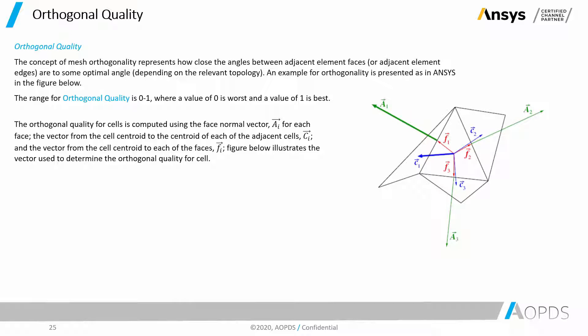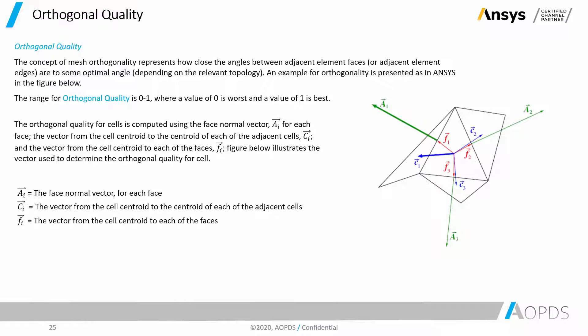Here we have a triad element, and there are three other triad elements that are attached to the edges of our element. The orthogonal quality for cells is computed using the face normal vector AI for each face. The vector from the cell centroid to the centroid of each of the adjacent cells, CI. And the vector from the cell centroid to each of the faces, FI. The figure below illustrates the vectors used to determine the orthogonal quality for a cell.